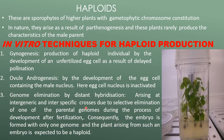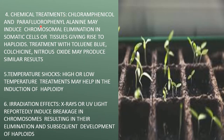Genome elimination occurs by distant hybridization, arising at intergeneric and interspecific crosses due to selective elimination of one parent genome during development after fertilization. Consequently, the embryo is formed with only one genome. Chemical treatments such as chloramphenicol and parafluorophenylalanine may induce chromosomal elimination. Treatment with toluidine blue, colchicine, nitric oxide, or nitrous oxide may produce similar results. Temperature shock and X-ray or UV irradiation may also help induce haploids.